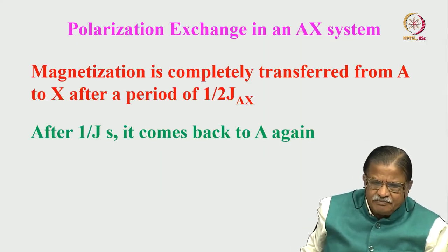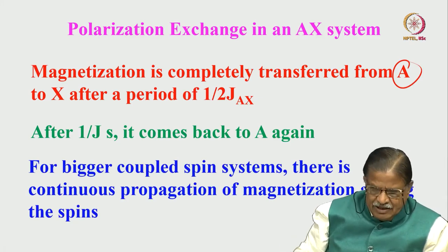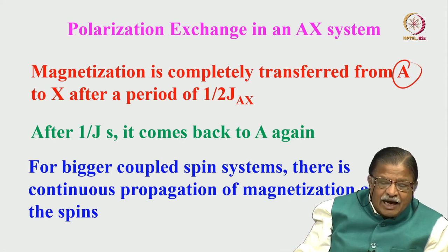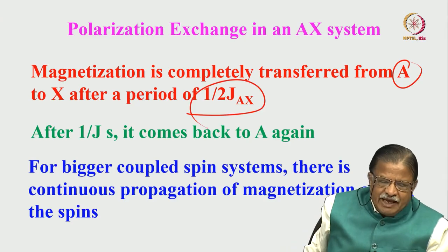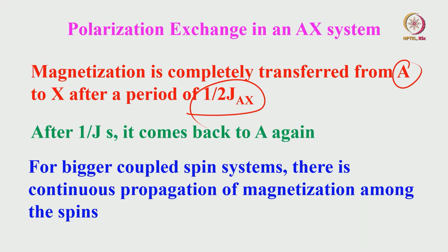For an AX spin system, the magnetization gets completely transferred from A to X during the spin lock. Complete transfer takes place after a period of 1/(2·J_AX). After some time it starts coming back — from A it goes to X, then after another half-coupling period it comes back from X to A. For a larger spin system with many coupled spins, there is continuous propagation of magnetization among the spins: one gives to the next, the next gives to the one after that, and back again. This is a cyclic process.